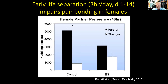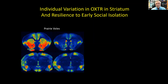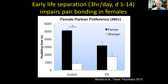Animals that experienced neglect showed no statistically significant partner preference compared to controls. Looking more carefully, she found that about half the animals in the early stress group could form pair bonds just fine — the other half could not. Some animals were susceptible to this early life neglect so that they wouldn't form a pair bond later in life, while others were resilient. She asked: where does this resilience come from?